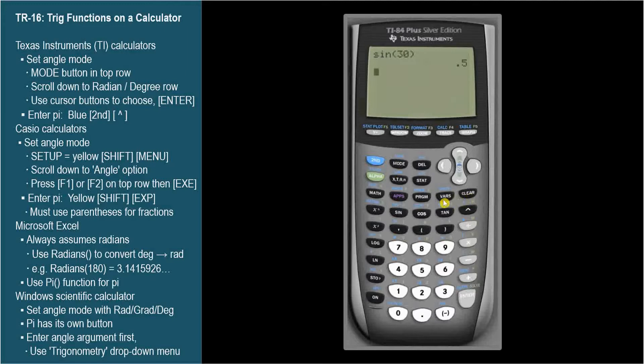Press cosine and then 5. Here's pi in blue above this exponent button. So to enter the constant pi, press the blue second button and then the exponent button. This is how you would enter any value that appears in blue above a button.